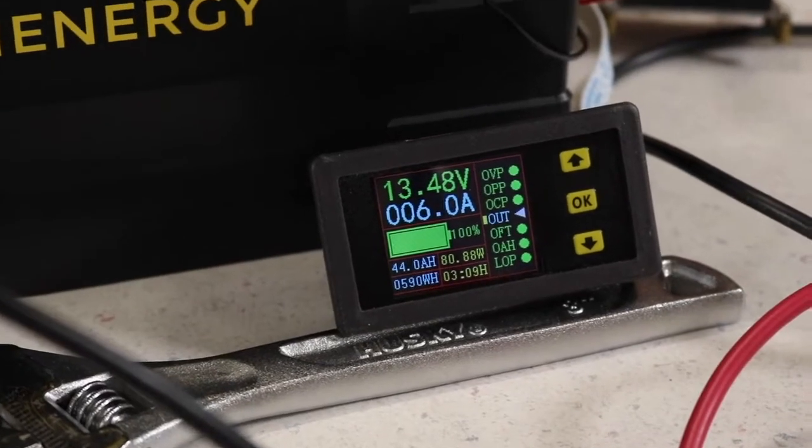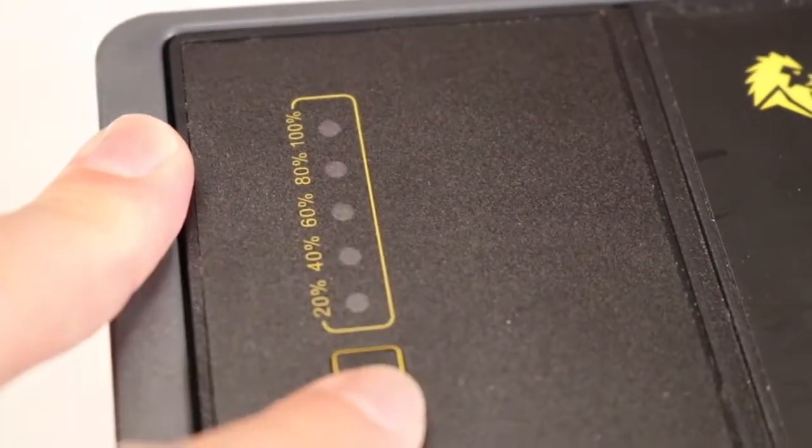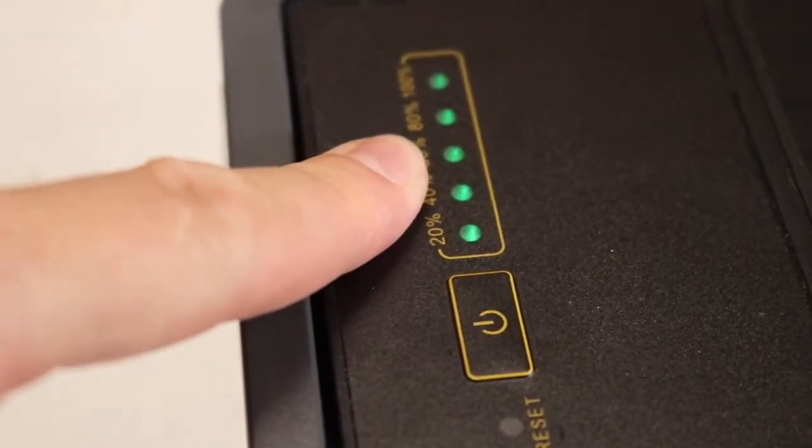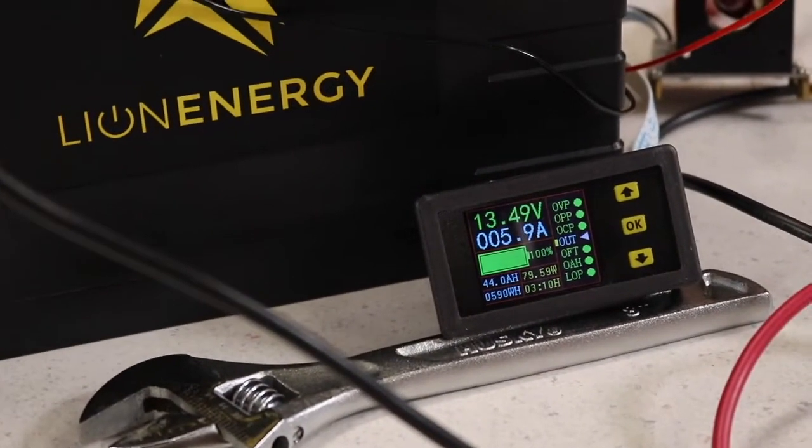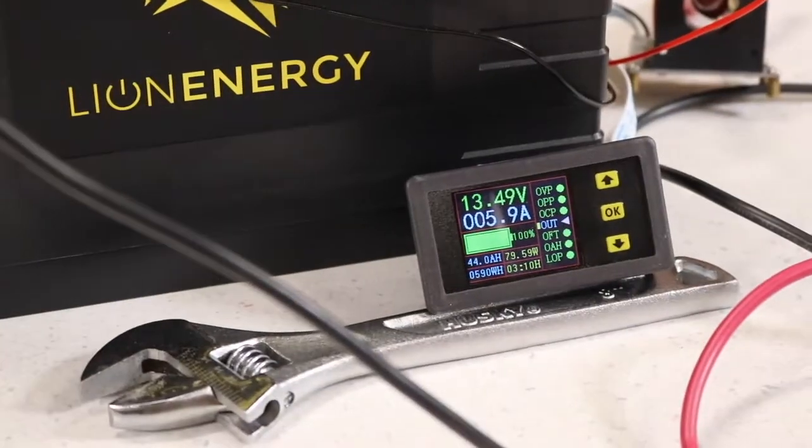We've put about 44 amp hours of charge into the battery. When we started, these Lion Energy batteries have this charge meter and we were about 60% on the charge meter. Now it's showing about full, so we should be close to full. One funny thing I did learn about our charger.